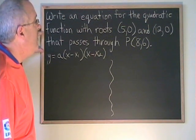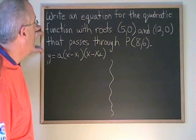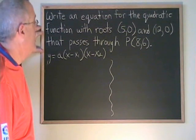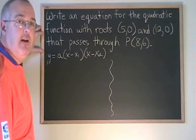In this question, we are asked to write an equation for the quadratic function with roots (5,0) and (12,0) that passes through the point (8,6).